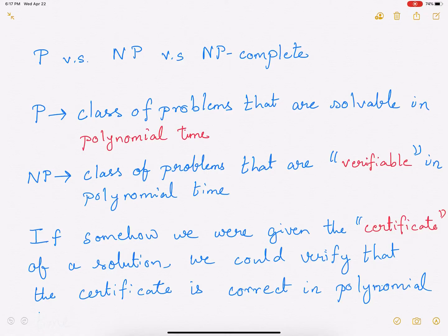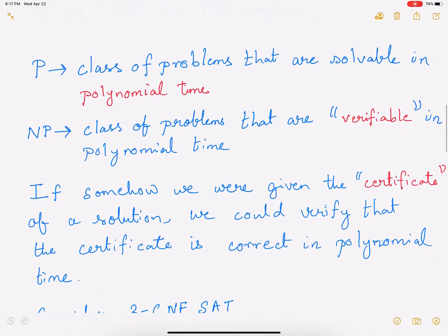What is the class NP? It consists of those problems that are verifiable in polynomial time. What do we mean by verifiable? It means if you're given a certificate of the solution — that is, somebody comes and tells you this is the solution to this problem — what you have to do is verify if what they told you is actually the solution or not. You're not trying to find the solution here. But if somebody presents a certificate and tells you that is the solution, you can verify if their solution is correct or not.